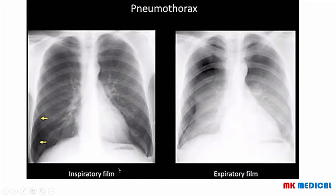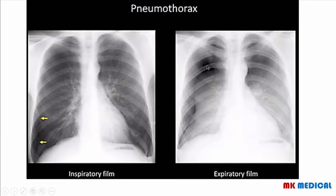Here is an example of a pneumothorax. On the left of your screen is an inspiratory film; on the right is an expiratory film of the same patient. What you need to note is that the lung volume hasn't changed significantly between inspiratory and expiratory films. You can see there is an edge or line that you can visualize — this is the visceral pleura and the demarcation of the end of the lung. Lateral to this, there are no pulmonary markings and the area is much darker than it should be — that's how you know there is air present, indicating a pneumothorax. The expiratory film makes it even more obvious as you can trace the outline of the right lung.